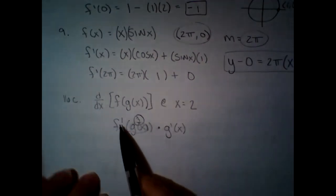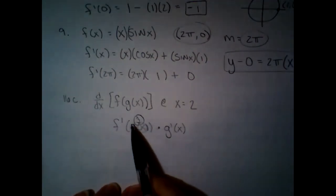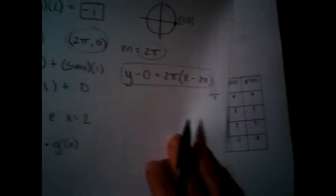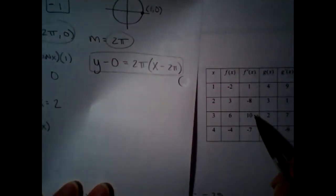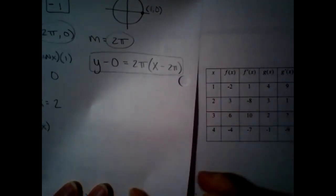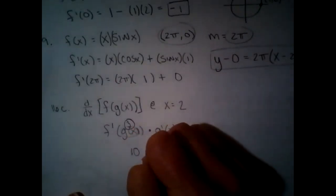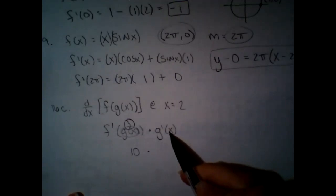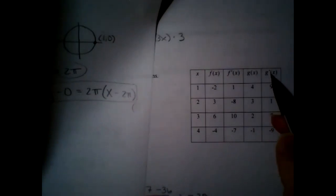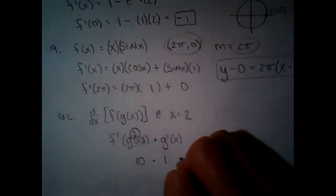So we know that inside part is three. Then we do f prime of three, and f prime of three is 10, so that first part is 10. Times g prime of two — we're still plugging in two — and g prime of two is one. So that second part is just one, and the final answer is 10.